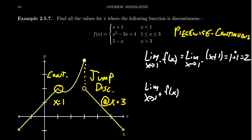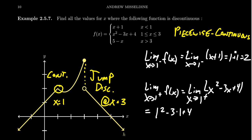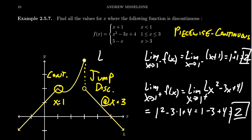For the right-hand limit as x approaches 1, if you're a little bit bigger than 1 you're in the interval where the function looks like the parabola x squared minus 3x plus 4. This polynomial is also continuous, so we evaluate it: 1 squared minus 3 times 1 plus 4 equals 1 minus 3 plus 4, which equals 2. Because the left-hand limit was 2 and the right-hand limit was 2, the limit as x approaches 1 of f of x equals 2, so f is continuous at x equals 1.